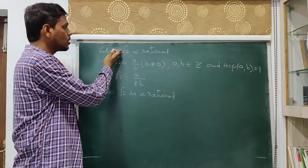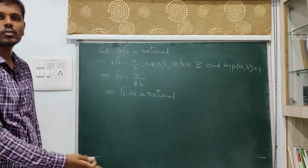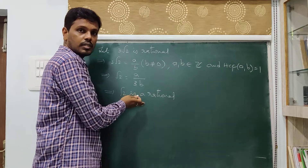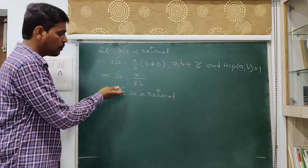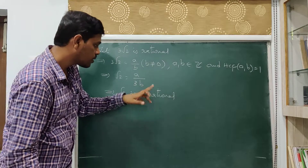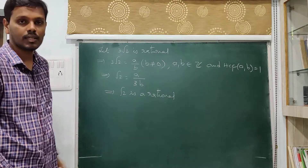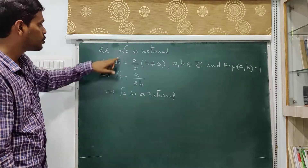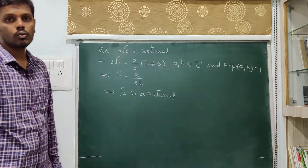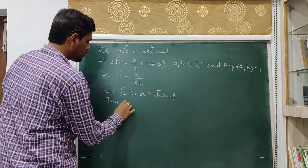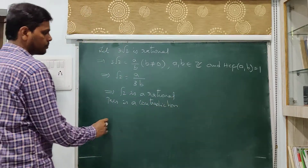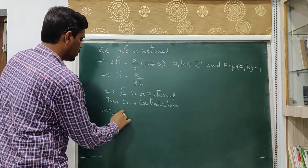That contradiction arose because we assumed something incorrect. The incorrect assumption is that 3√2 is rational. Therefore the correct conclusion is that 3√2 is irrational. You can write more clearly: a by 3b is a rational number, which implies root 2 is a rational number — this is a contradiction. Therefore 3√2 is irrational.